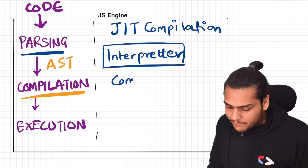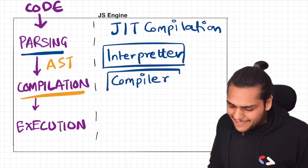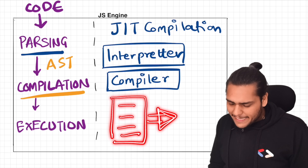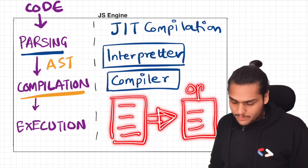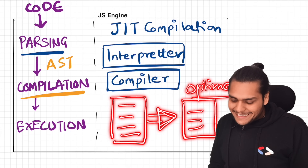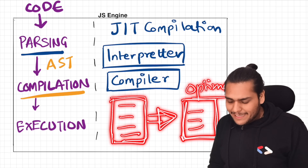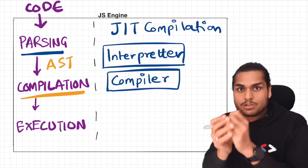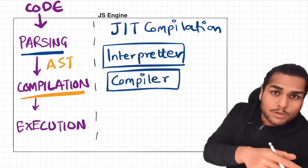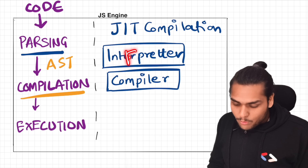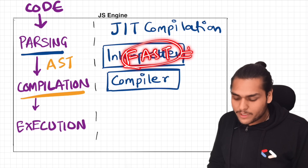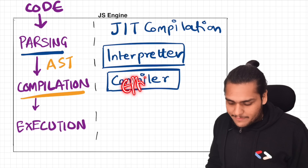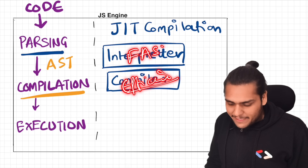On the other hand, many languages use a compiler to compile their code. In case of a compiler, your whole code is compiled first, even before executing. The code is compiled and a new optimized version is formed, which then executes very fast with a lot of performance improvements. In an interpreter, the code starts executing immediately without waiting for compilation. With a compiler, we have more efficiency; with an interpreter, the code runs fast.